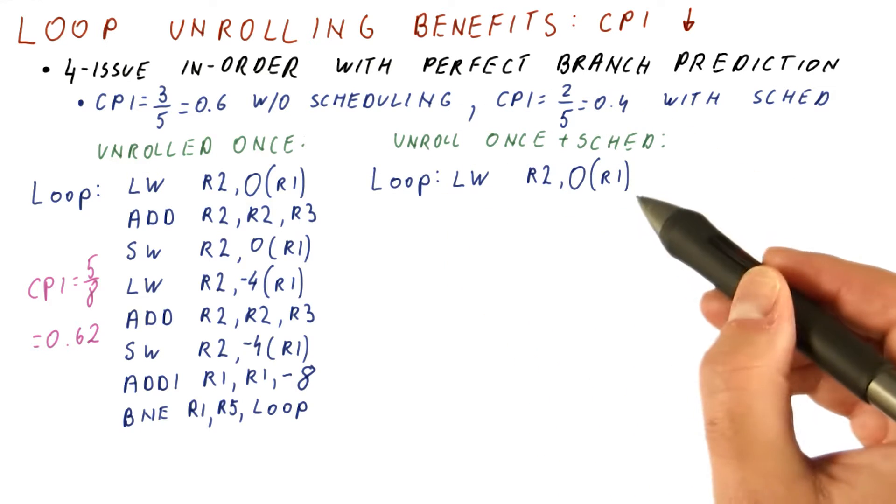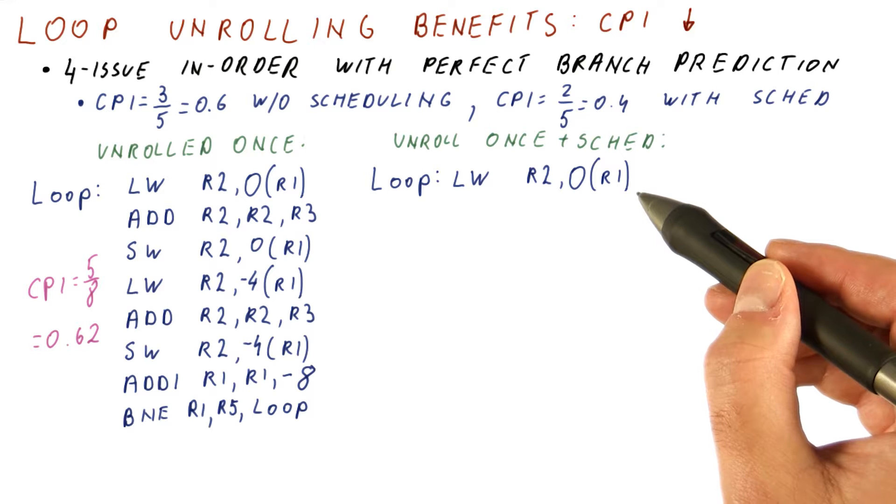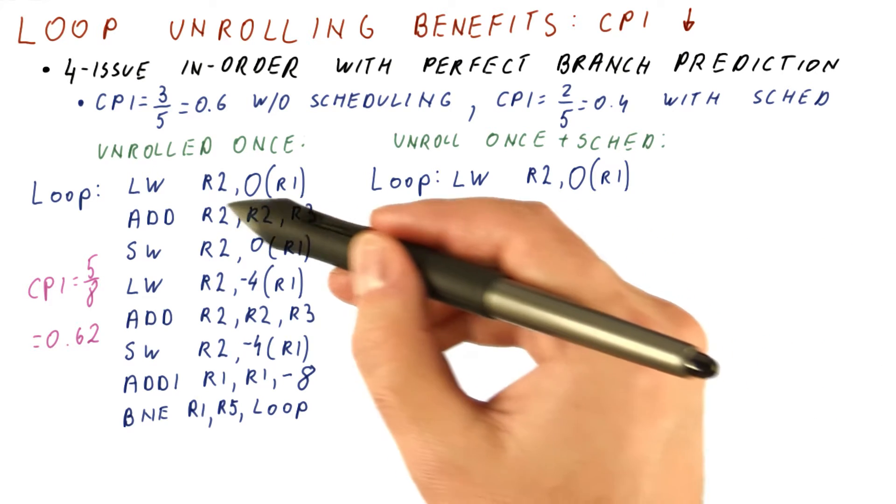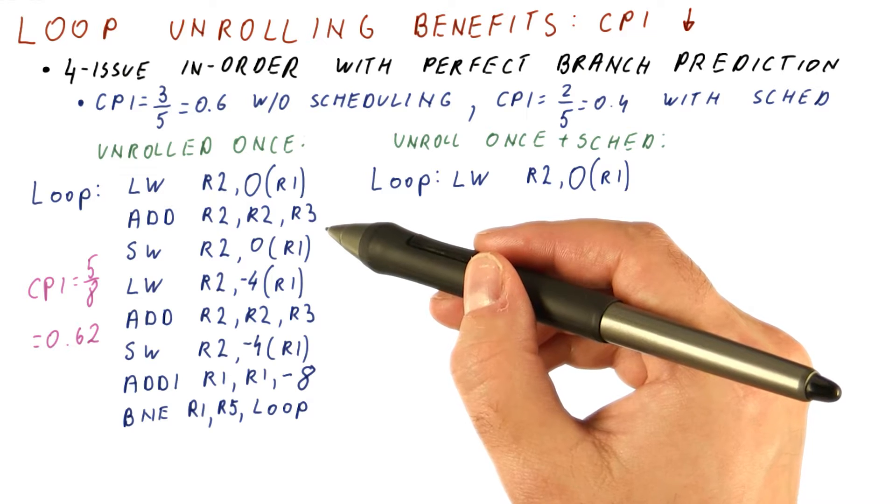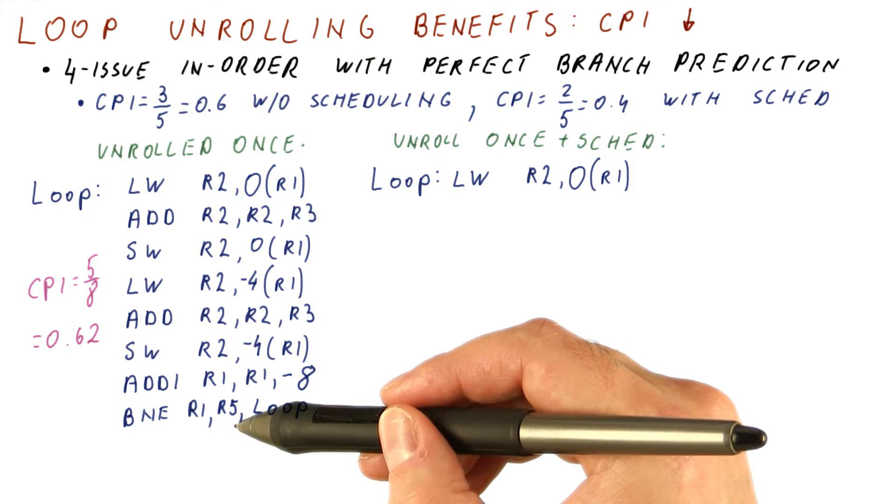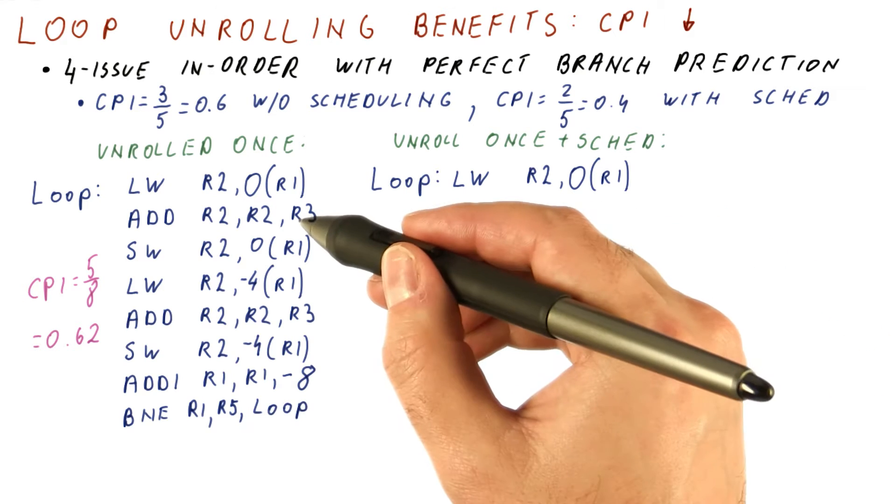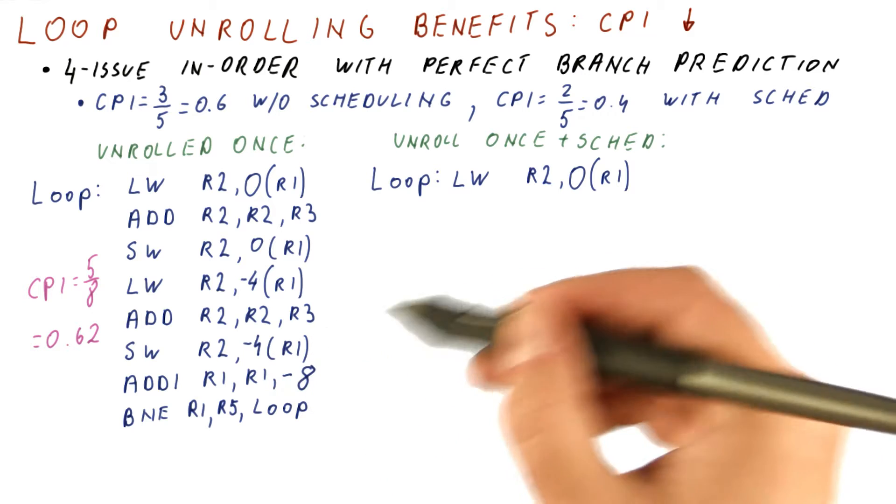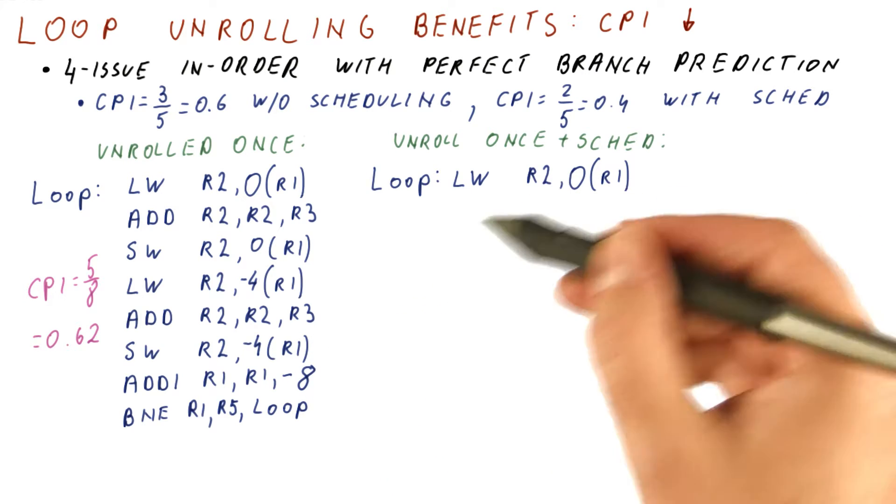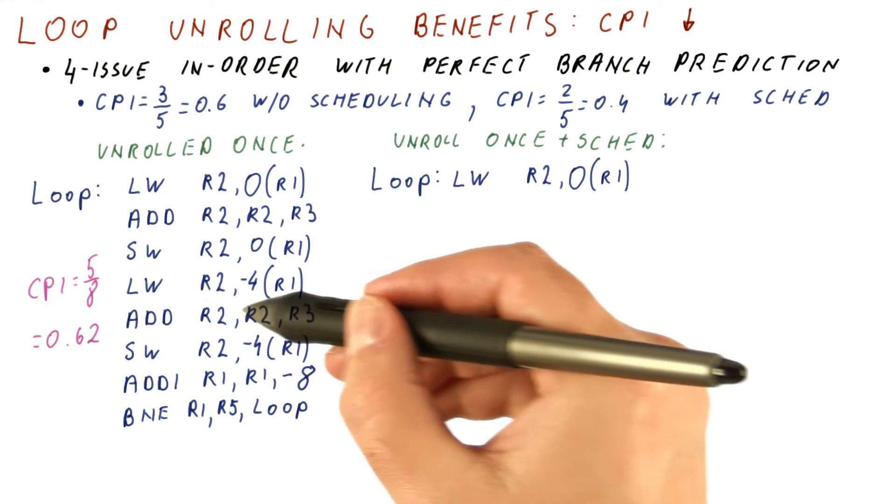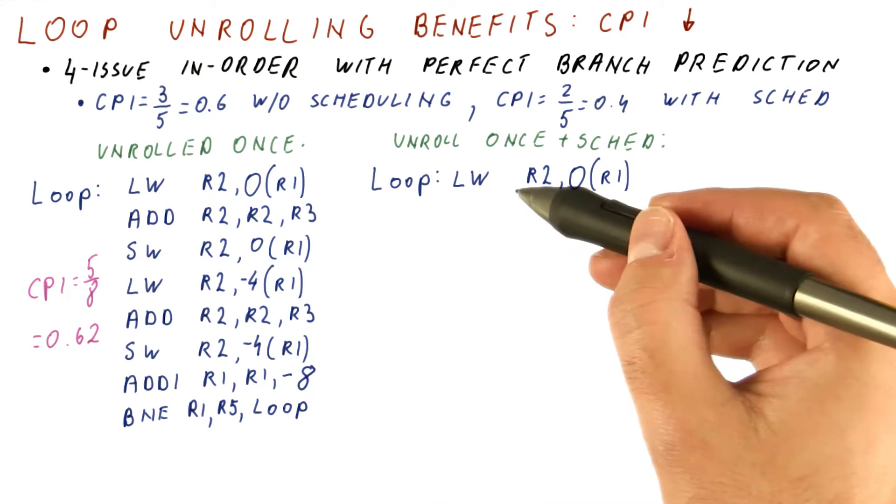In the scheduled loop, we will have our load for the first iteration of the two that we are really doing. And now if we put the add here, it would again have a dependence, so the load and whatever we already did here would be the only thing that can be done in this cycle. So instead of doing the add next, we will look for what else can we do here that doesn't depend on this load. And it turns out that this load here, the load for the second iteration, can be done in parallel with this load.